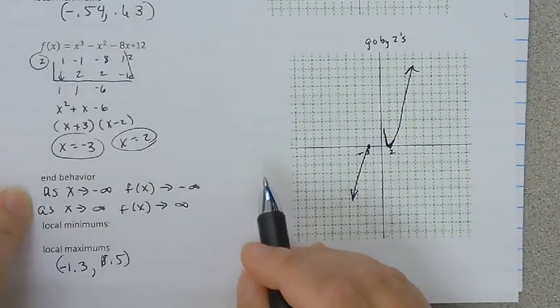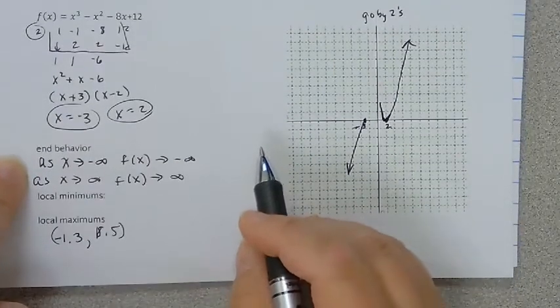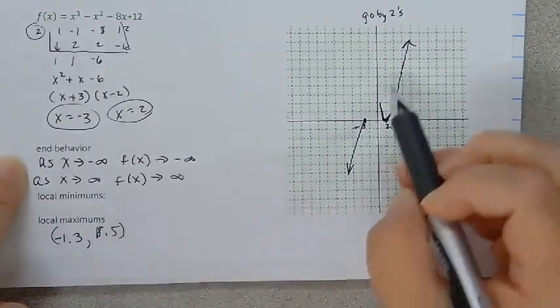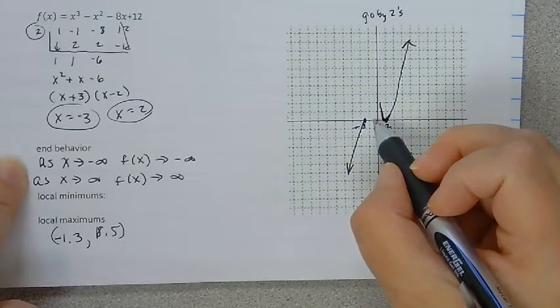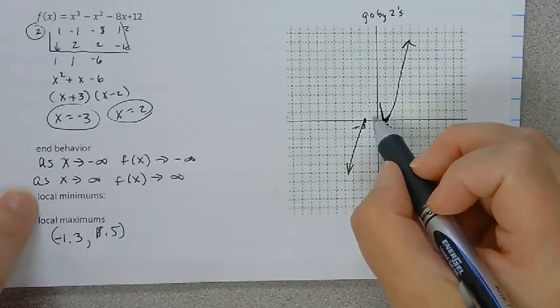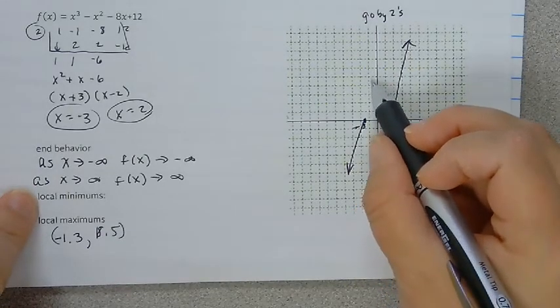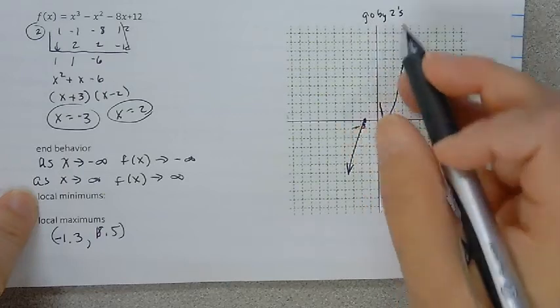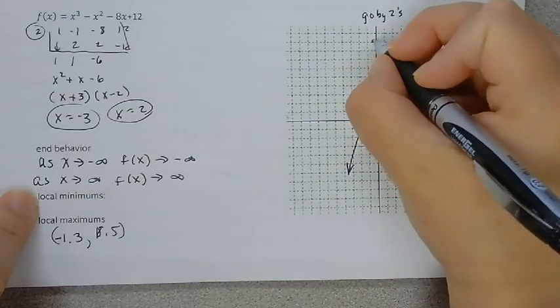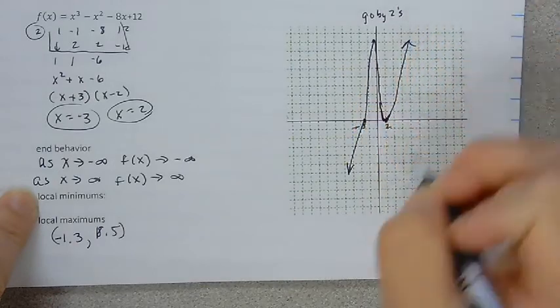The only thing I had left to find was to put my maximum in. And we already found that was at negative 1.3 up here at 18. So that was 2, 4, 6, 8, 10, 12, 14, 16, 18. That was about right here. And it kind of goes something like this.